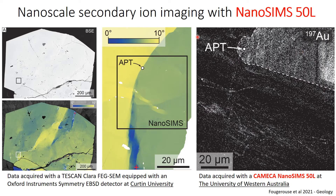The sample we studied in this work is a rather euhedral pyrite, as you can see on this backscatter image here, from a Chinese gold deposit.